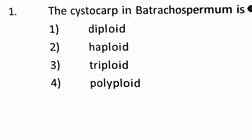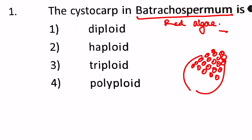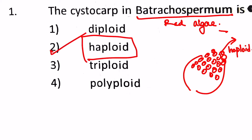Now we are going to solve the BHU 2017 algae questions. First: the cystocarp in Batrachospermum — what is it? In Batrachospermum, which is red algae, the cystocarp is found only at the carposporophyte stage. It's a carb-shaped structure and all the spores present inside are actually haploid. The answer is haploid.